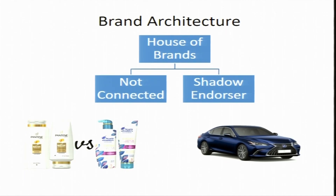House of brands has two possibilities. One possibility is they are not connected — within the house of brands you have several brands about which consumers do not know they are actually connected to the mother brand. For example, Pantene and Head & Shoulders have two different functions to perform, and because of that they do not really conflict with each other. That is how house of brands functions when the brands within are not connected.